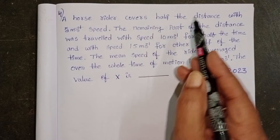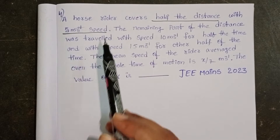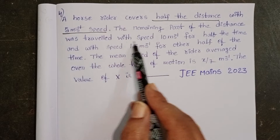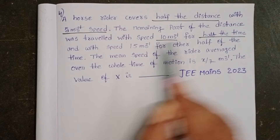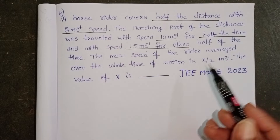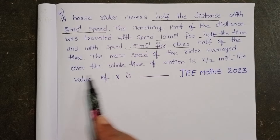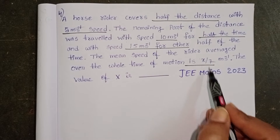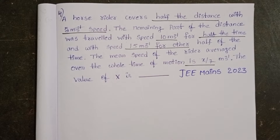A horse rider covers half of the distance with 5 meter per second speed. The remaining part of the distance was travelled with speed 10 meter per second for half of the time, and with speed 15 meter per second for the remaining half of the time. The mean speed of the rider averaged over the whole time of motion is x by 7 meter per second. The value of x is?